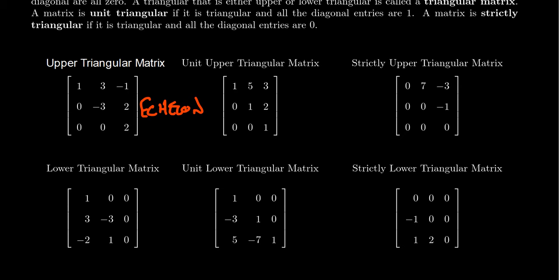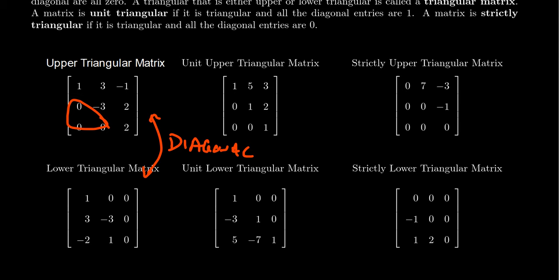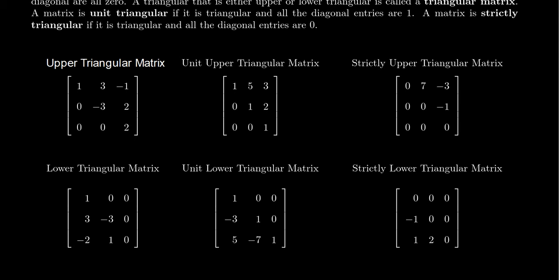If something is both upper triangular and lower triangular, that actually makes it a diagonal matrix. Upper triangular says everything below the diagonal is zero, and lower triangular says everything above the diagonal is zero. So if you put this together, everything except for the diagonal has to be zero. The intersection of the space of upper triangular and lower triangular matrices is the space of diagonal matrices.